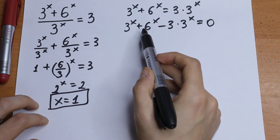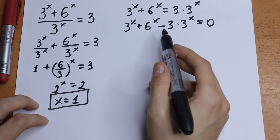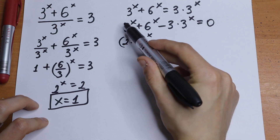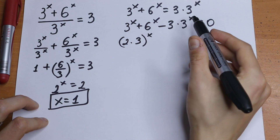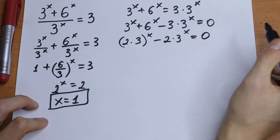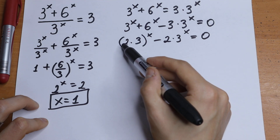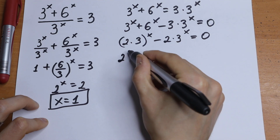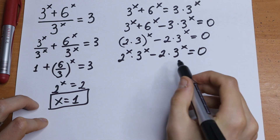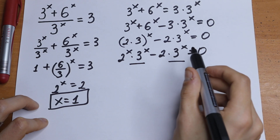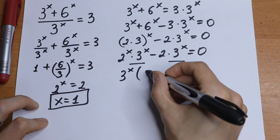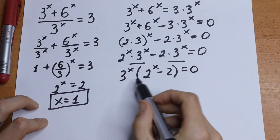We can express 6 to the power x as 2 times 3 to the power x — so 2 times 3 raised to the power x. Then we have 3 to the power x minus 3 times 3 to the power x, which will equal 2 minus 2 times 3 to the power x equal to 0. We have a product and we raise both of these to the power x, so we get 2 to the power x and 3 to the power x, minus 2 times 3 to the power x equal to 0. We can factor out 3 to the power x as a common factor, and in parentheses we will have 2 to the power x minus 2 equal to 0.